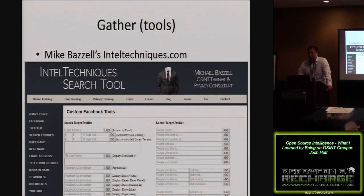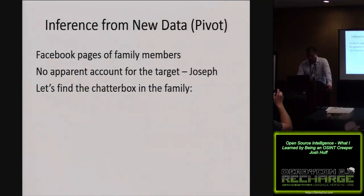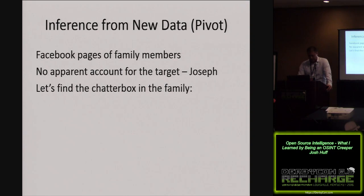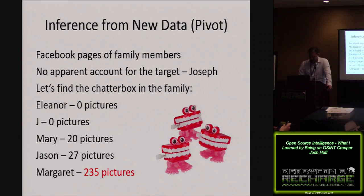I go back to my tools. Mike Bazzell's Intel Techniques — he's got excellent social media search tools online. His Facebook search sets are very useful. The right side of the screen helps you find an account or target, and the left side helps you dig into that target's information. Using the right side, very quickly I can find all of the known associations from the Pitbull search. Inferences: it's all family members. There's no apparent account for the target Joseph. The Joseph L. Christmas I found was the father's account, with very little use. So I start digging into the actual accounts to find the chatterbox of the family. Eleanor had no pictures, Jay had no pictures, Mary had 20, Jason had 27, Margaret had 235 pictures — there's our chatterbox.